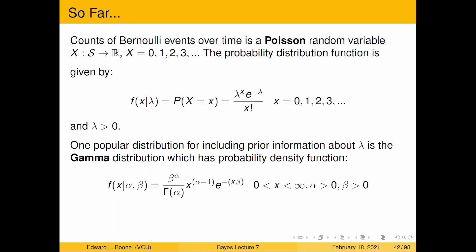Welcome to Bayesian statistics — the posterior distribution for the Poisson random variable. So far we've been talking about counts over time, which is a Poisson random variable. It takes on counts: zero, one, two, three — all whole numbers. It has a distribution function, and we were talking about how to put information into this distribution.